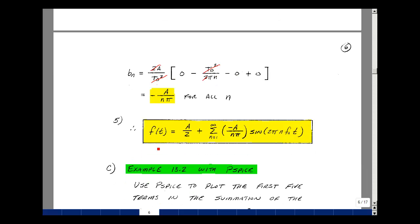Let's combine our results then. So f of t is equal to a0, which was a over 2, plus the summation from n equals 1 to infinity, of a sub n, which is equal to 0, and then just b sub n times the sine of 2 pi n f0 t.